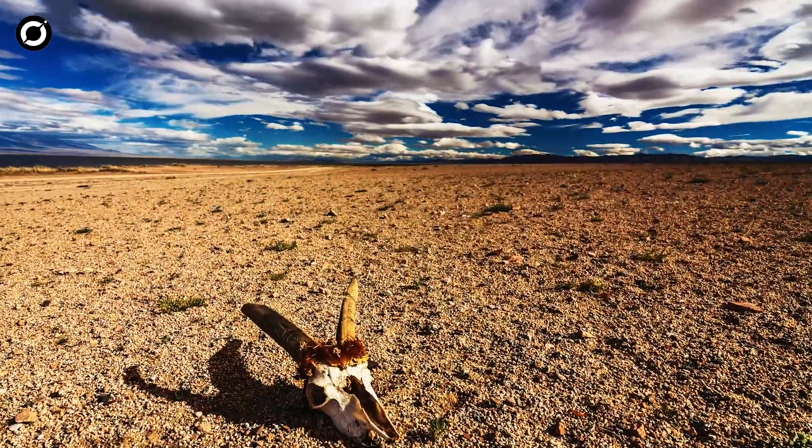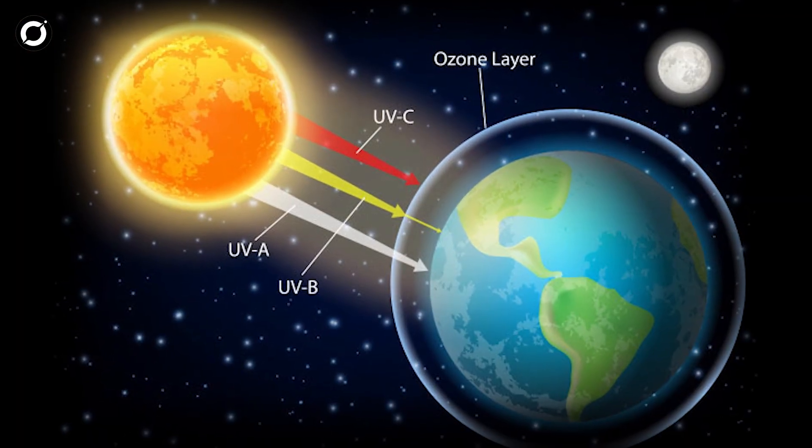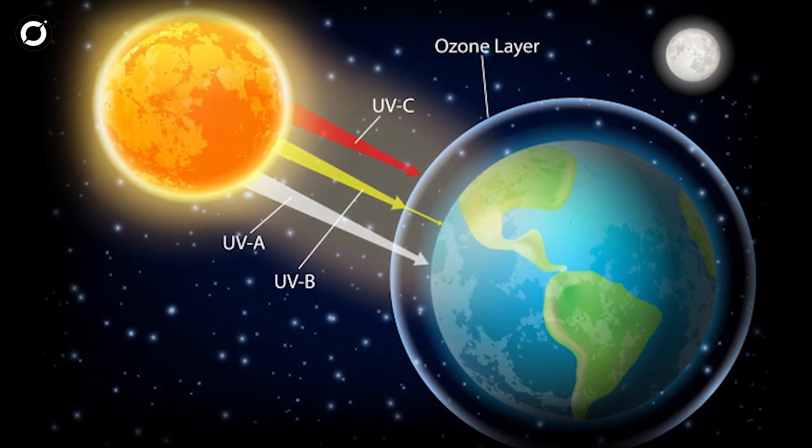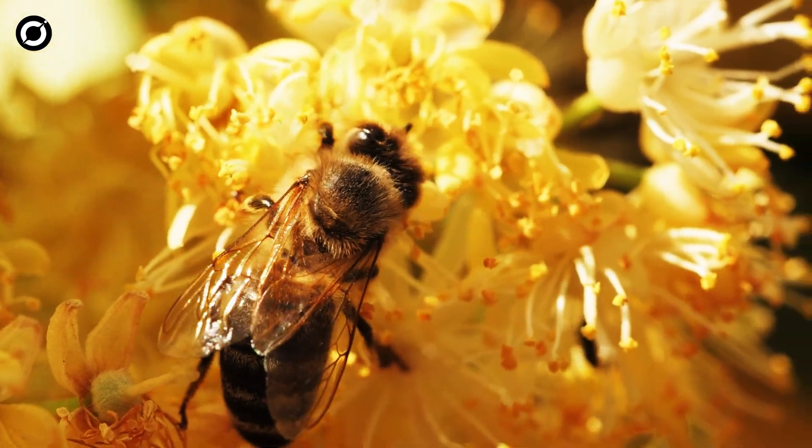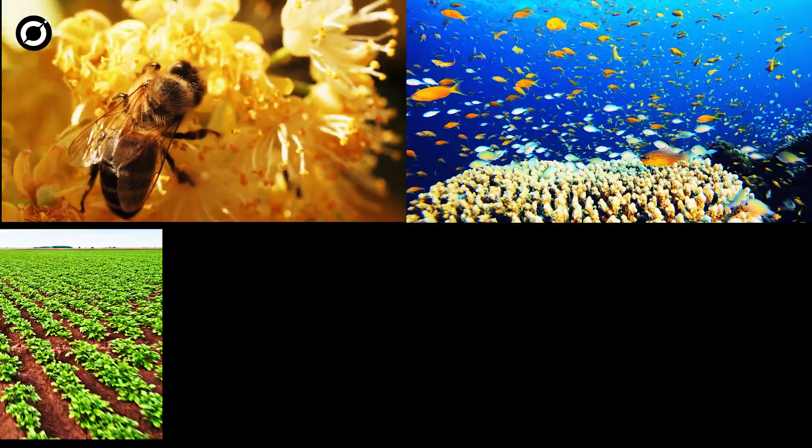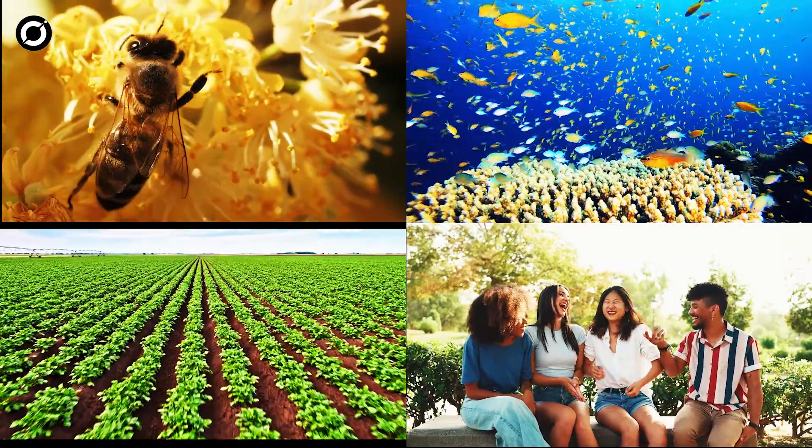This could lead to massive biological effects. The radiation would damage the ozone layer, which protects us from harmful ultraviolet radiation from the sun. Without the ozone layer, Earth would be bombarded by lethal UV rays, causing widespread damage to ecosystems, especially marine life, plants, and humans.